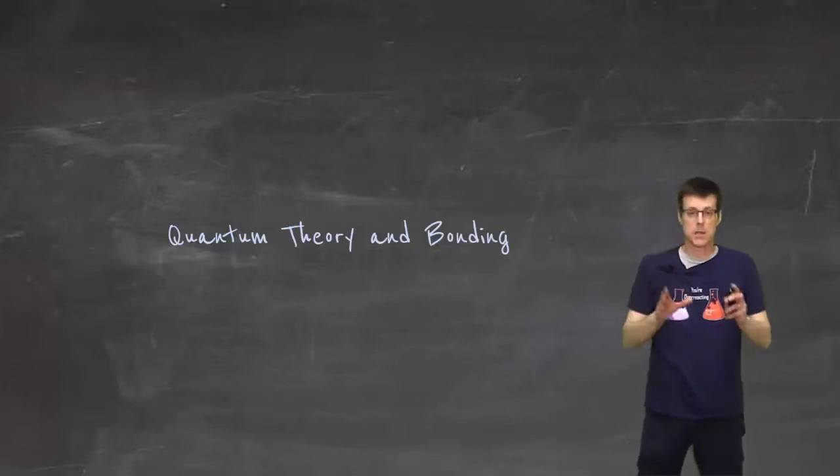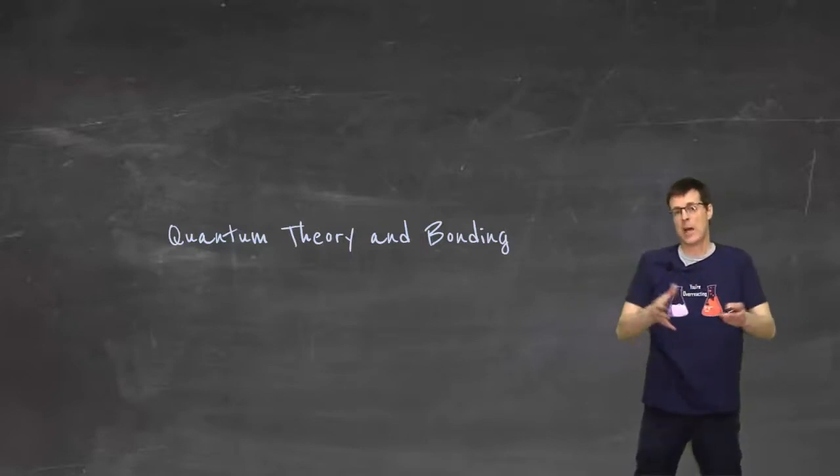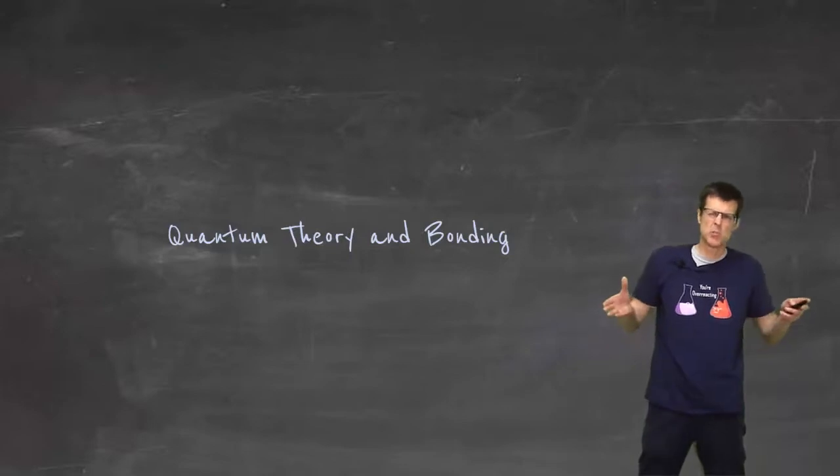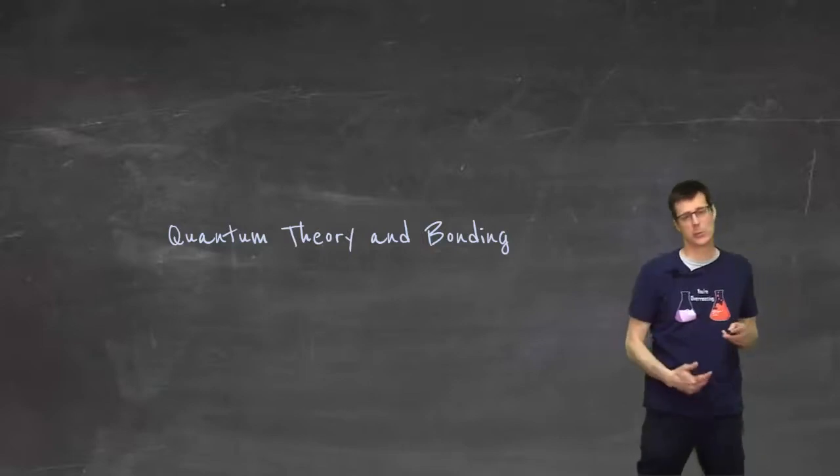What we want to do today is talk about quantum theory and bonding and take our currently accepted model of the atom and use it to figure out how we explain bonding and see if we can do a better job of answering those questions because the problem with it last year was that we didn't have a theory that could explain those weird instances in bonding.